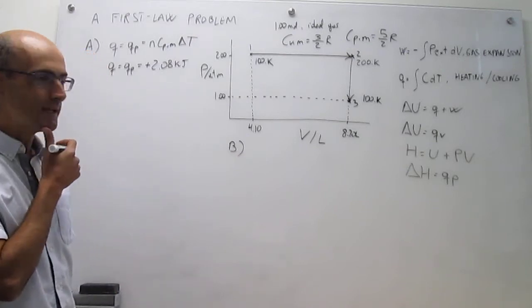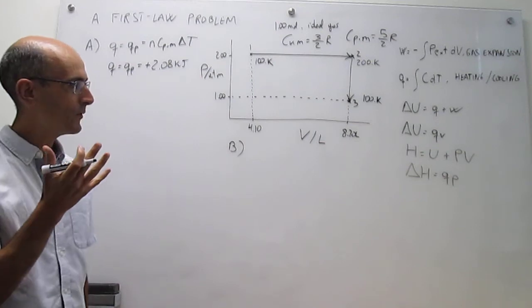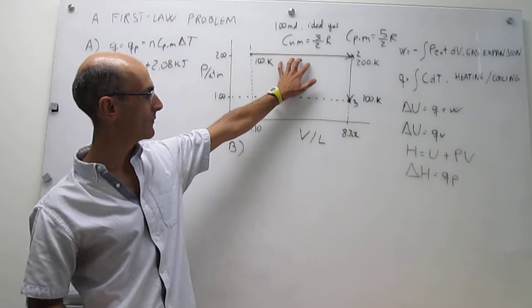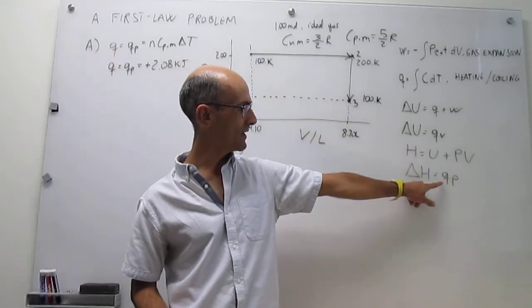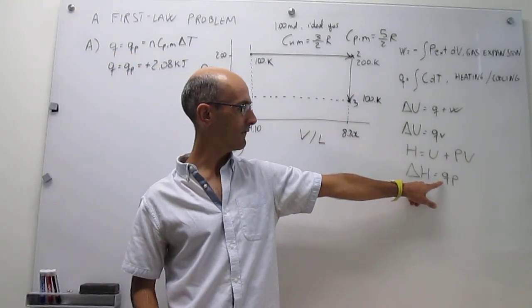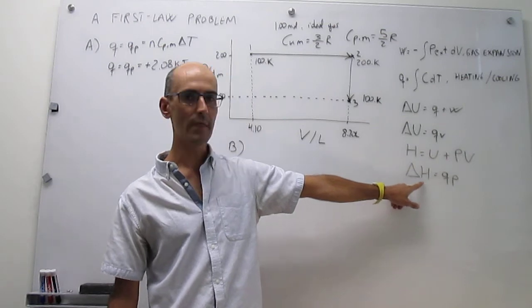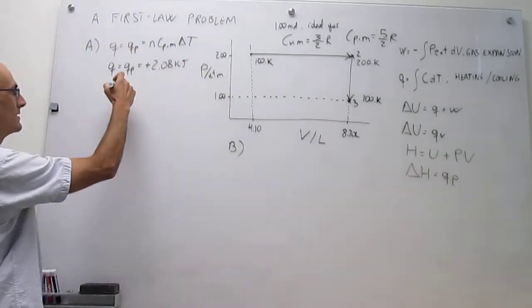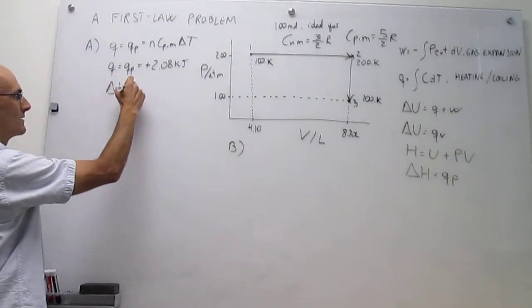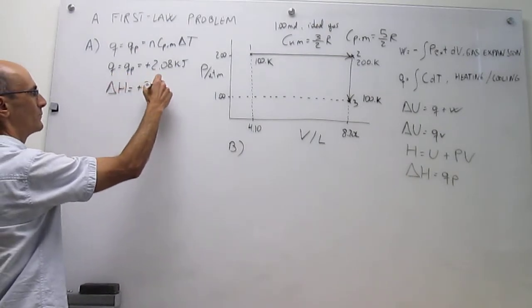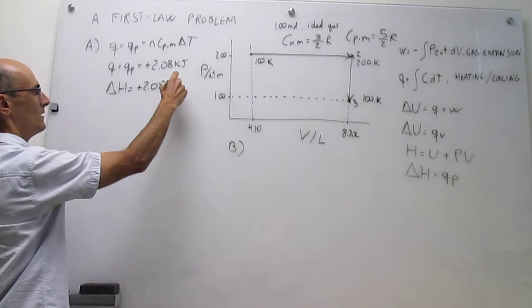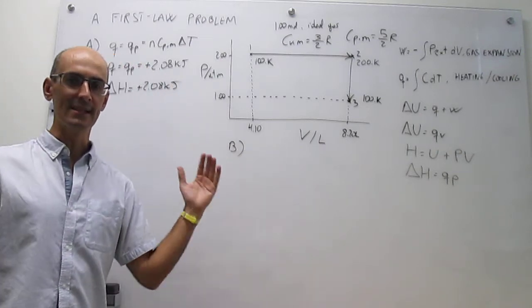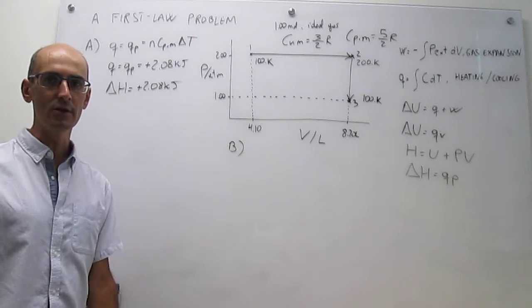Delta H is actually fairly simple. Notice that we're working at constant pressure, which means Q = Q_P, and if you have Q_P then ΔH is the same thing. So this number that we just calculated is also ΔH — very simple — plus 2.08 kJ. The enthalpy increases when you increase the temperature, and that is just a good manifestation of it.